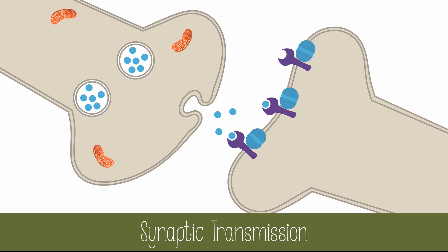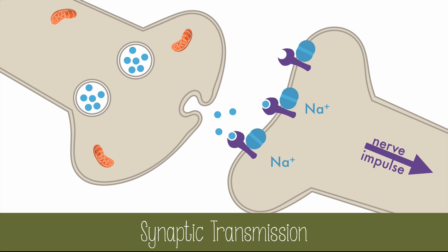They diffuse across the synaptic cleft and bind to receptors on the post-synaptic membrane. The binding of neurotransmitters triggers sodium ion channels to open and pass the threshold potential. The action potential is then propagated along the post-synaptic neuron.